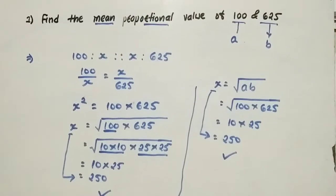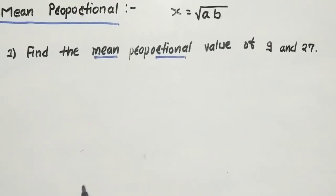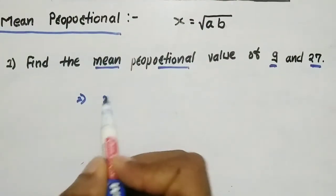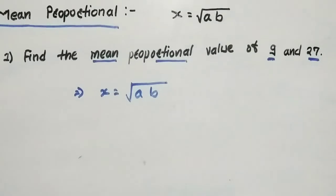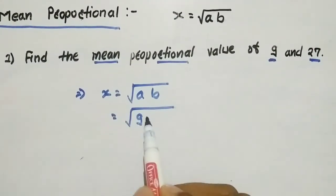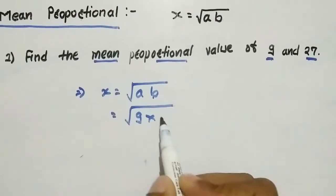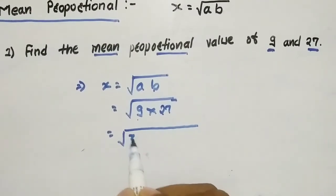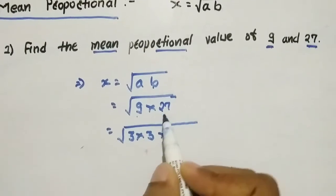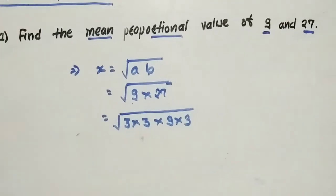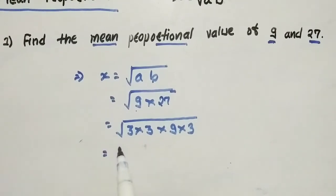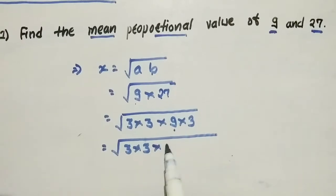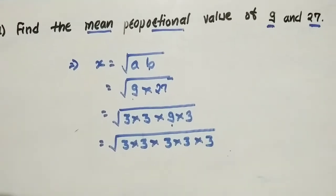Example number two: find the mean proportional of 9 and 27. Using the formula directly, x equals square root of a times b, where first number a equals 9 and b equals 27. Now 9 is 3 times 3, and 27 is 9 times 3, which is 3 times 3 times 3. So square root of 9 times 27 gives us 3 times 3 times 3, and taking out the pair of 3s we get 3 times 3 equals 9 inside, giving the answer.